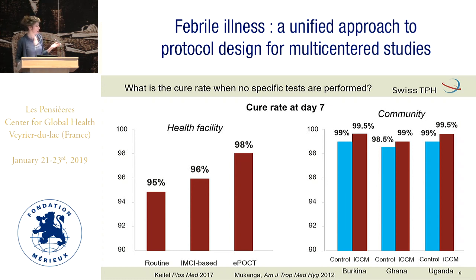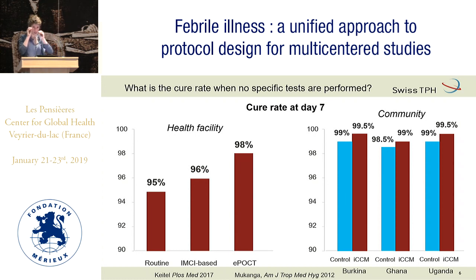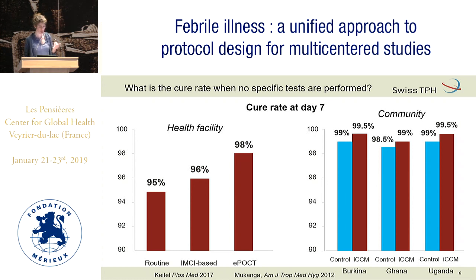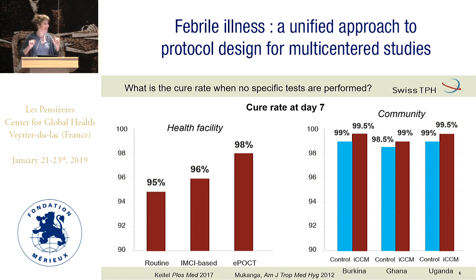If we try to do better by implementing an IMCI-based algorithm, we get 96%. With an adapted version of IMCI — trying really to look at each of these small pieces of the puzzle that are difficult to put in a paper version but manageable in an electronic version — you can improve slightly to 98%. But probably we will not manage to go higher than that. At community level, whatever you do, they get cured.